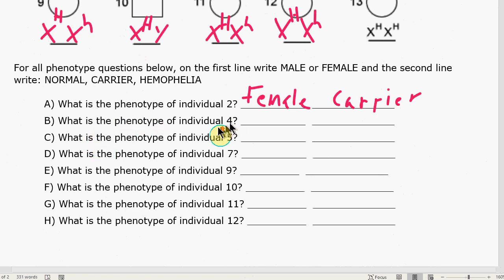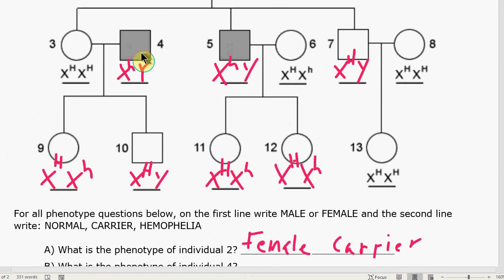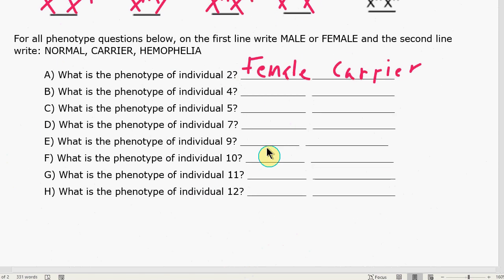Question B, what is the phenotype of individual four? Individual four is a male hemophiliac. And then I will let you finish question C through H.